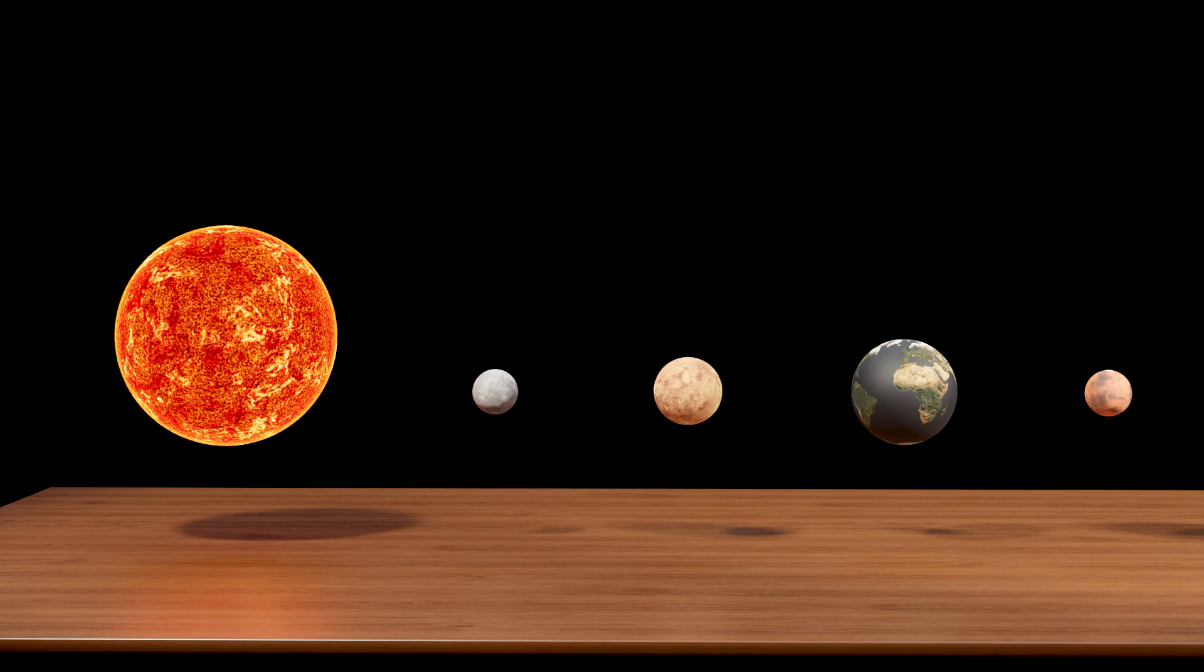Mercury is often shown right on the sun's surface in models, but it's actually about 0.4 AU, or 60 million kilometers, from the sun. Light takes about 3.2 minutes to reach Mercury from the sun.